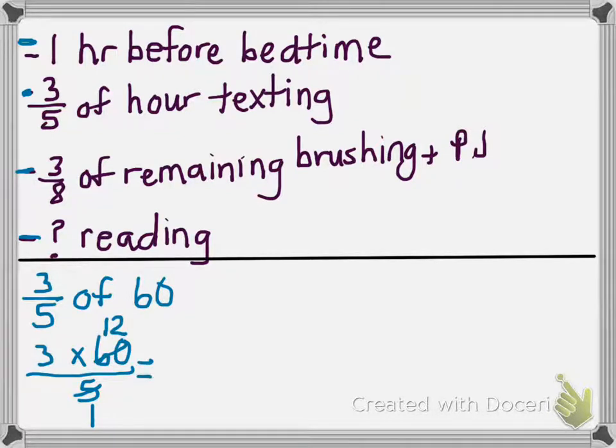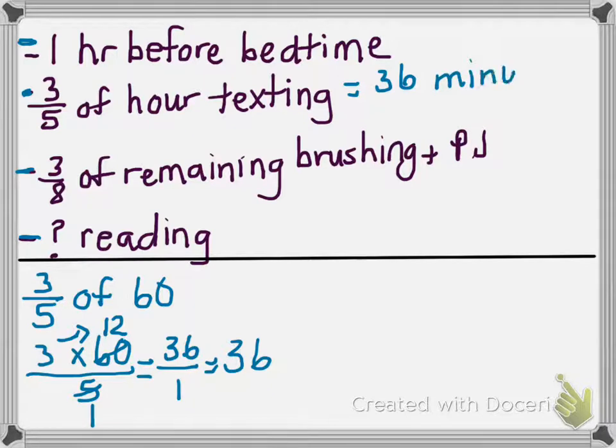I can multiply across now. Three times twelve is thirty-six over one, which is equal to thirty-six. So three-fifths of an hour texting is equal to thirty-six minutes. So I would say this is my step one.